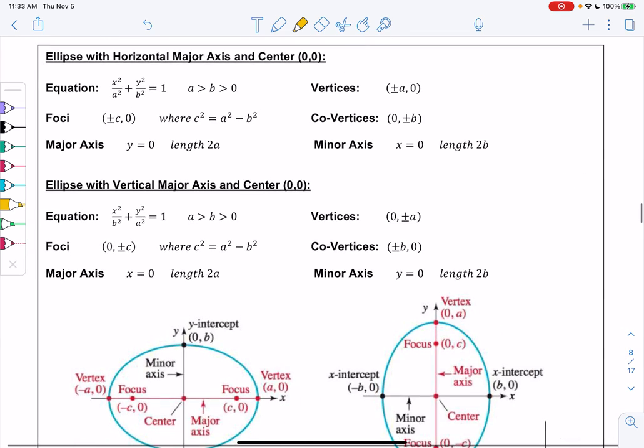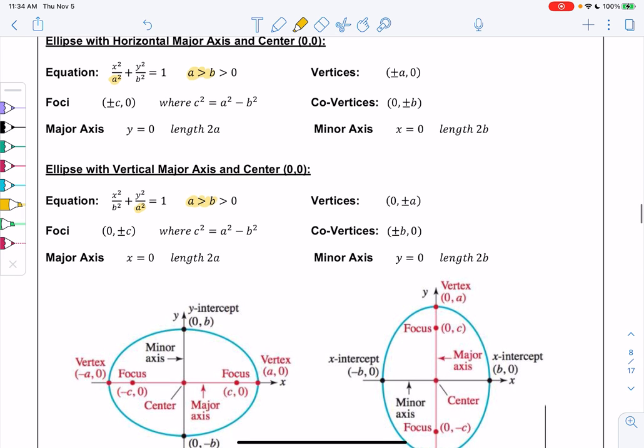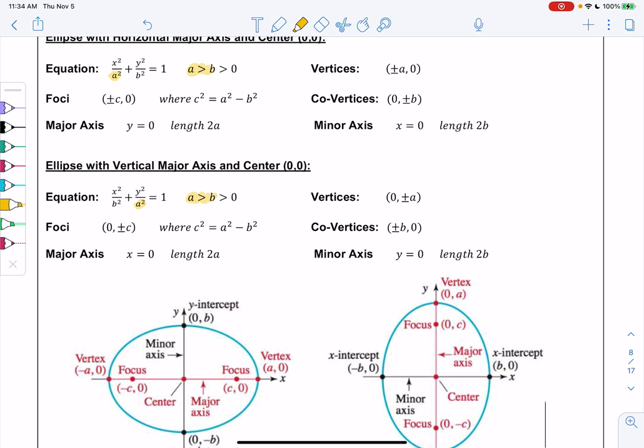So how I'm going to tell the difference between horizontal and vertical is which one has the bigger coefficient. So for horizontal, I have x squared over a squared. And then for a vertical one, I'm going to swap it and y squared is over a squared and x squared is over b squared. So whichever denominator is bigger, that tells you the direction.